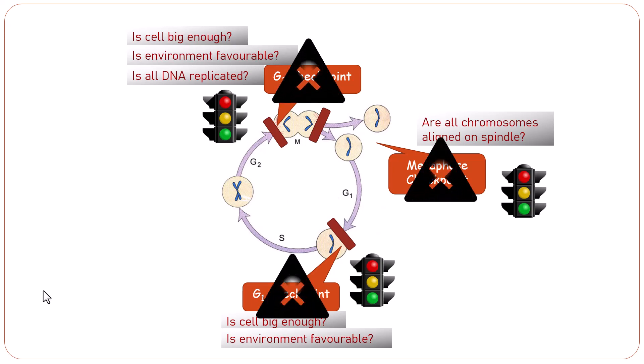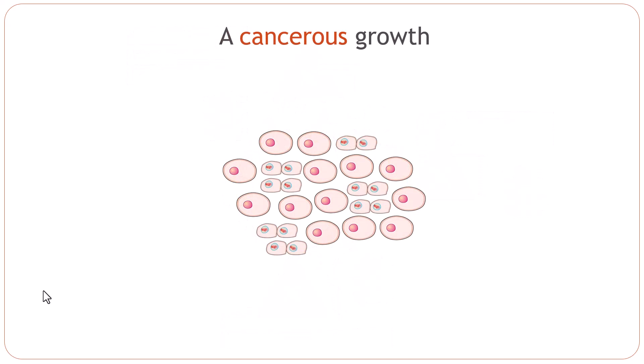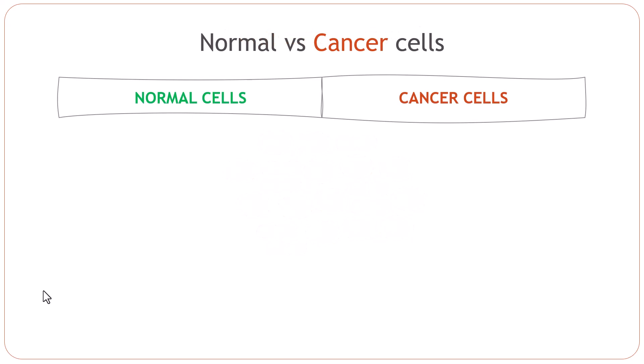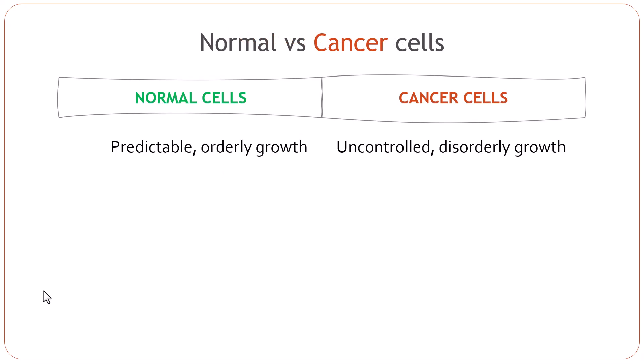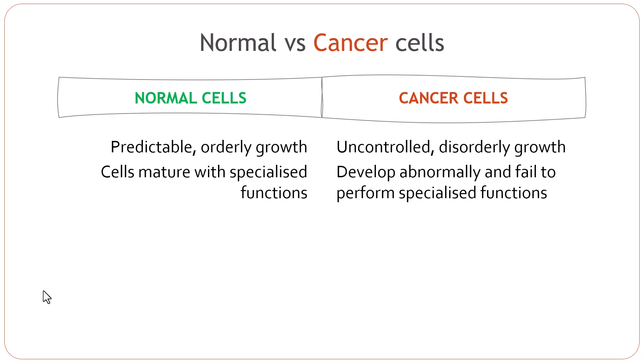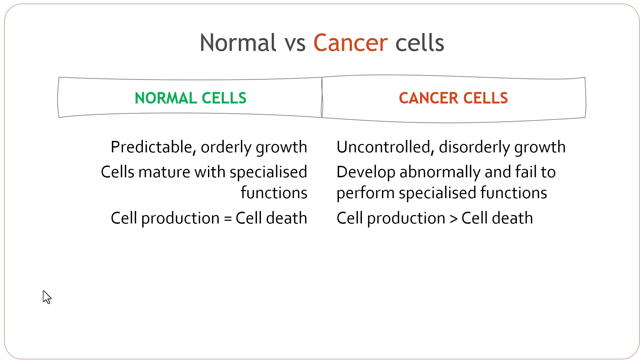What happens if these checkpoints fail? This is what happens in cancers. As a result, the cells keep on dividing even though there are errors in the DNA, even though there are other issues, even though there is a lack of nutrients — the cells will keep on dividing. If we compare normal cells with cancer cells: normal cells have predictable, orderly growth, whereas cancer cells have uncontrolled, disorderly growth. Normal cells mature with specialized functions, but cancer cells develop abnormally and fail to perform specialized functions. In a normal tissue, cell production equals cell death, but in a cancerous tissue, cell production is more than cell death, so the tissue becomes bigger.